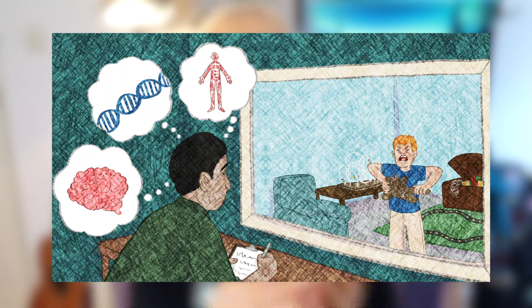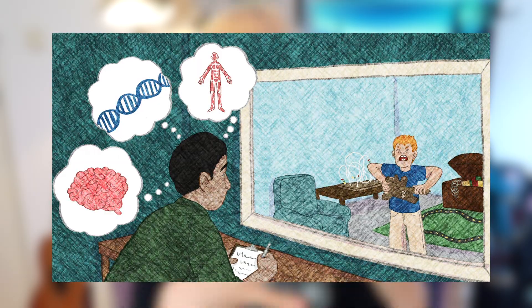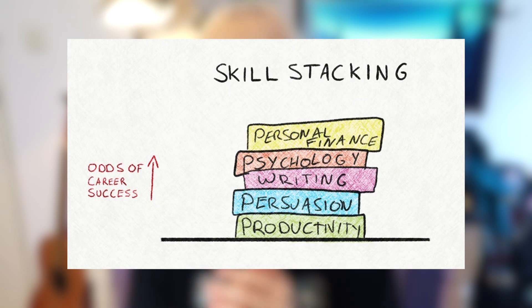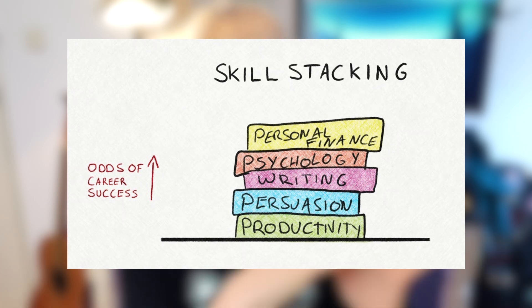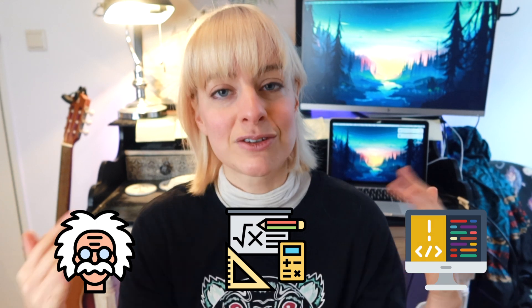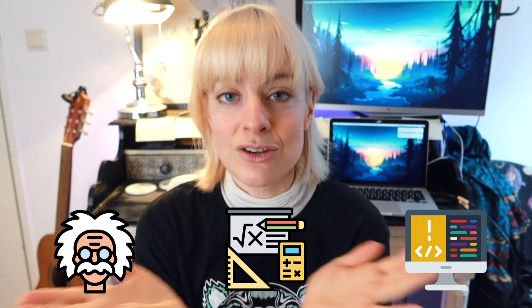Instead of trying to become the best programmer, I would lean into the skills you already have. If you're doing a bachelor's in biology, psychology, or physics, lean on those skills. If you're in the top 25% of one of those areas and also a decent programmer, that combination makes you pretty unique. For example, my background is in physics and I'm pretty good at mathematics — combined with my programming skills, that gives me a strong skill set to create new work in computational neuroscience.